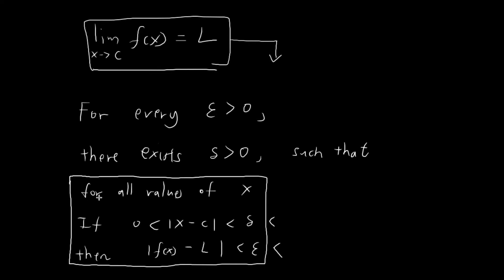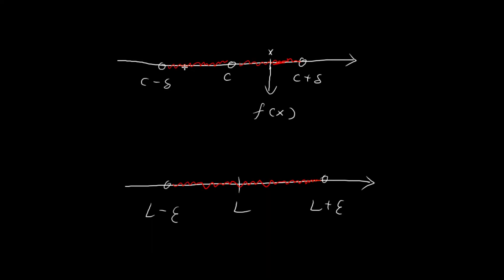Now let's look at the 'for all values of x' quantifier. This means the conditional statement must be true for all values of x for which the first condition holds — which corresponds to all values within the delta-neighborhood of c. So for all values of x within that shaded region, their corresponding values f of x must always lie within a distance of epsilon from the limit.